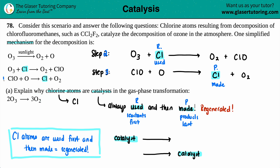If we added up all three steps and came up with a general reaction, things that appear on both the left side and the right side will cancel out. Your catalysts will cancel out and your intermediates will also cancel out. So the Cl atoms cancel, and the ClO species also cancel since they appear on both sides. What you have left is two O₃ on the left and three O₂ on the right — that is the overall reaction.